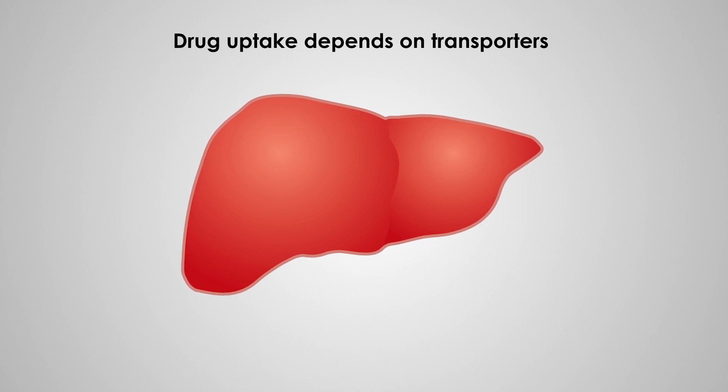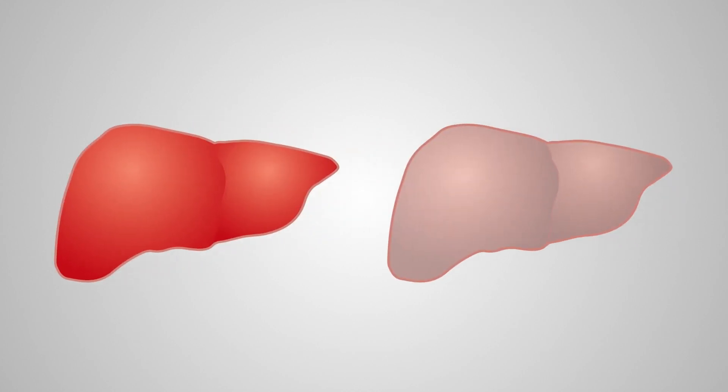Take the liver, for example. Drug uptake into all cells of liver 1 is homogeneous. In liver 2, the same amount of drug is taken up. However, one-third of the cells take up three times as much drug. Two-thirds of cells take up none.